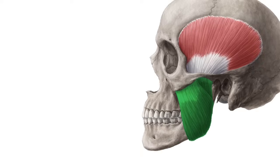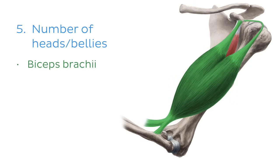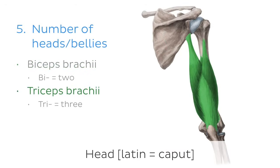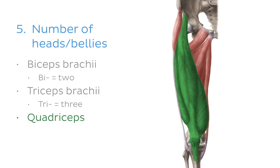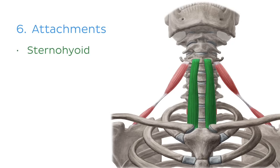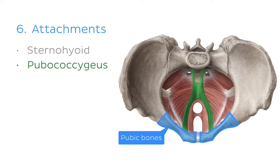The name can also tell you about the number of heads or bellies a muscle might have. For instance, the biceps brachii muscle, which has two heads. Other examples include the triceps brachii or quadriceps femoris. Another criterion for muscle names is their attachments — muscles get their names from bones, bone parts, or tissue they are attached to. Such as the sternohyoid muscle, which attaches to the sternum and the hyoid bone, or the pubococcygeus muscle, which extends between the pubic and coccygeal bones.